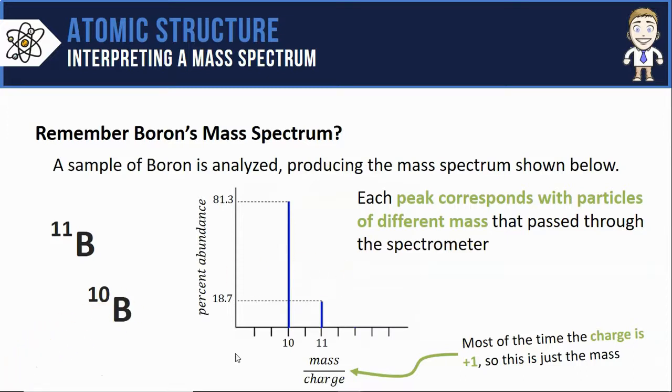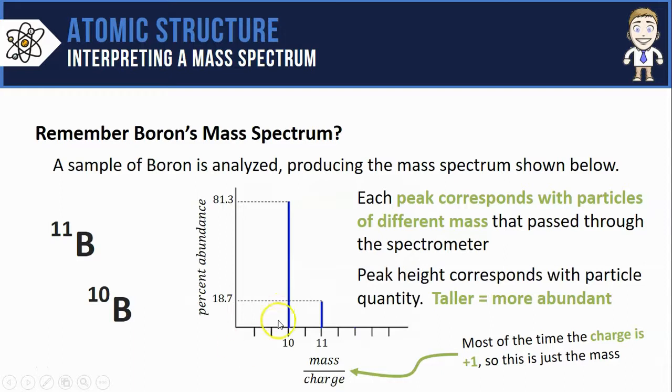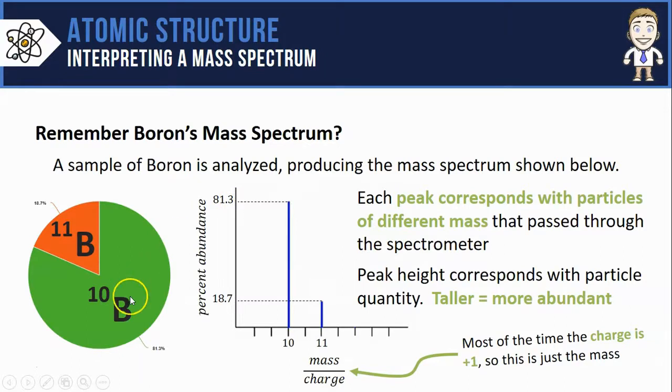Since peak height corresponds to abundance, I know that the boron-10 isotope is much more abundant. In particular, it makes up 81.3% of the whole sample, the boron-11 the other 18.7%.